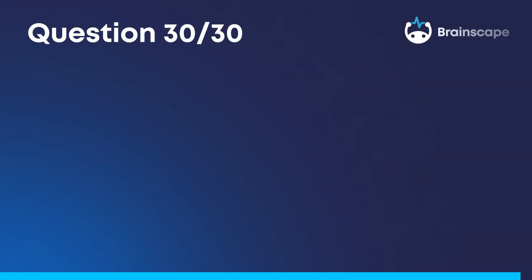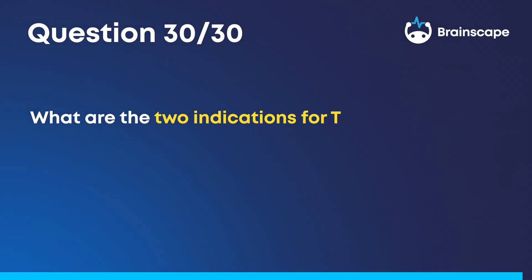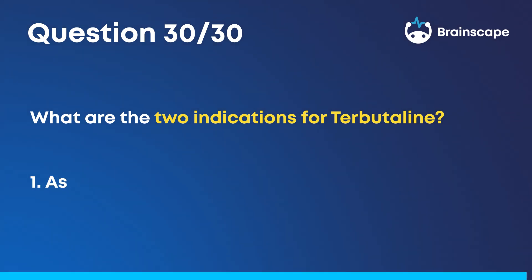Question 30. What are the two indications for terbutaline? Asthma and COPD.